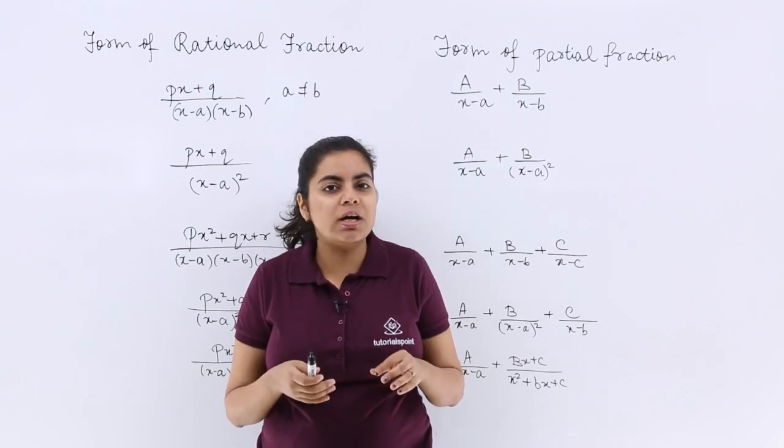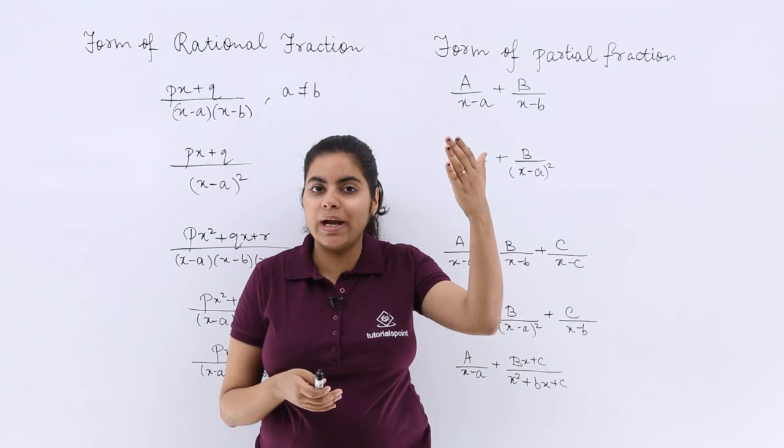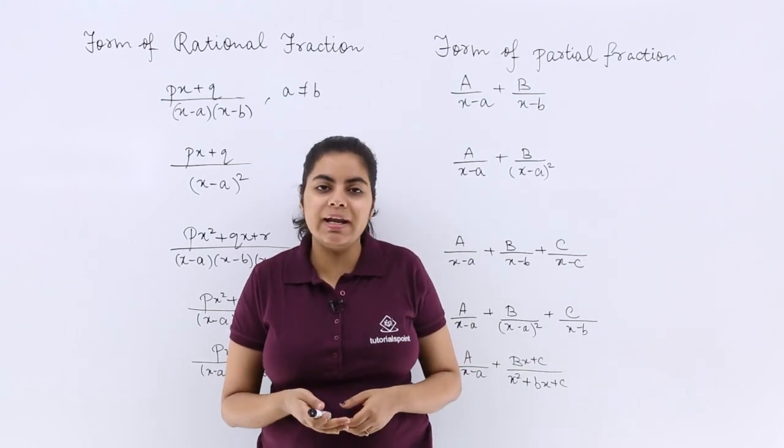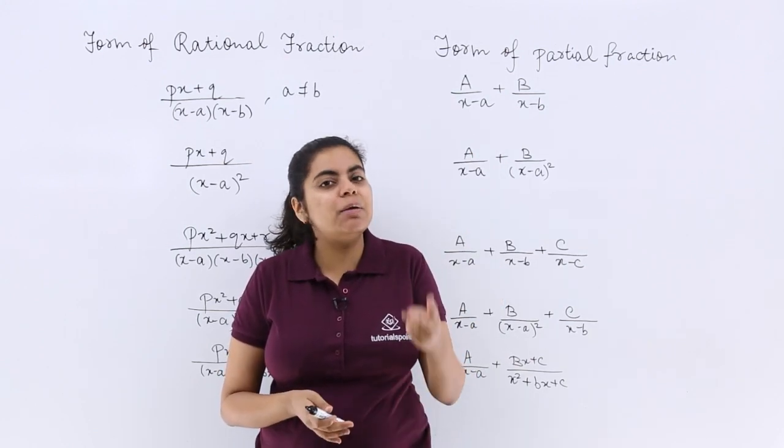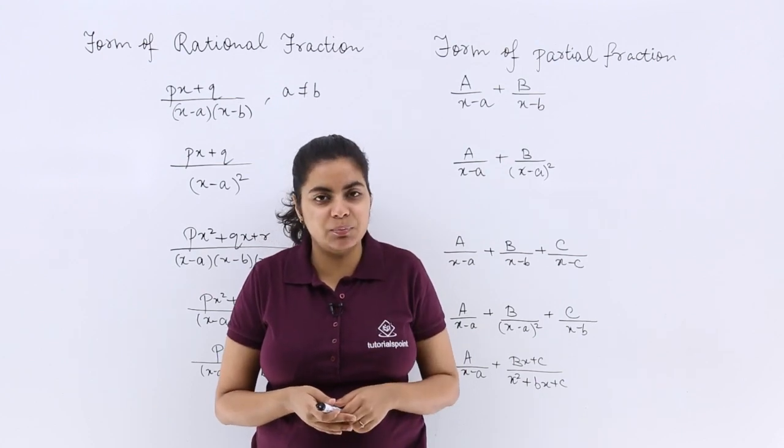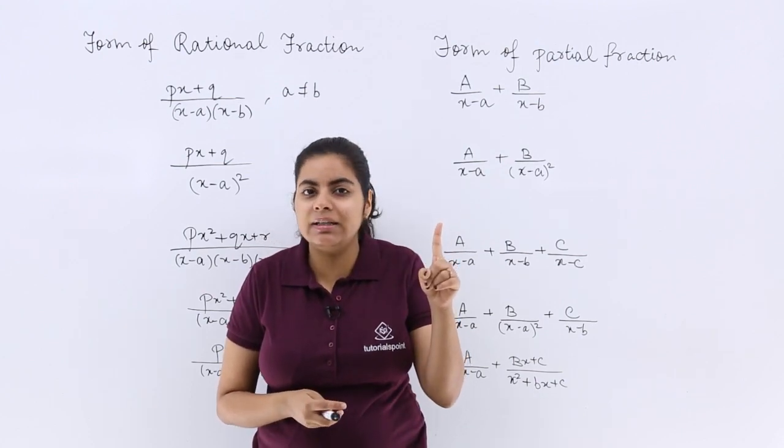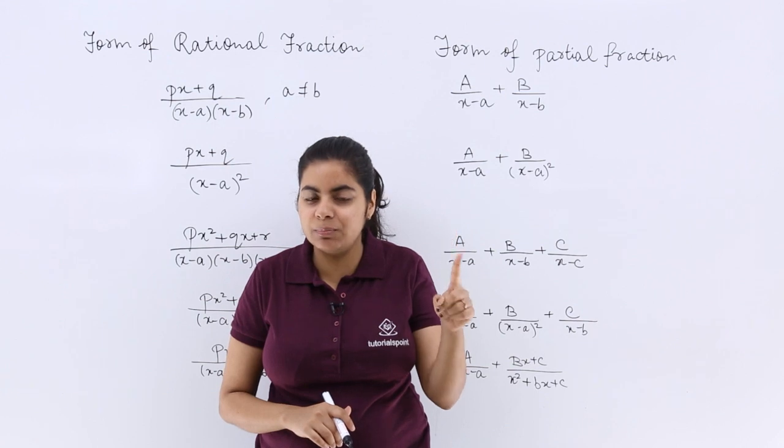When I talk about some fraction—numerator upon denominator—the fraction may be called a rational number, and there are basically two types of rational numbers. One type is called the proper rational number.